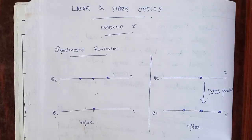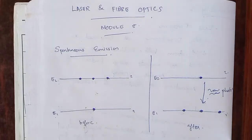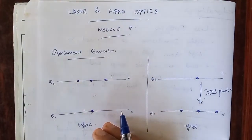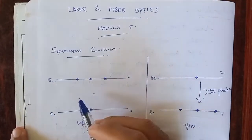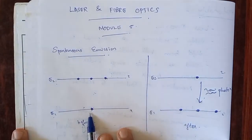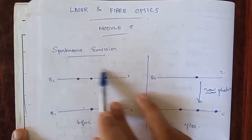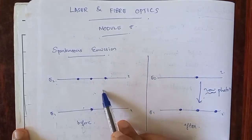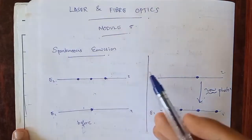Spontaneous Emission is the spontaneous emission of a photon. It is the emission of radiation by natural de-excitation of atoms or molecules from a higher energy level to a lower energy level. This is the definition of radiation by natural de-excitation of the energy level.